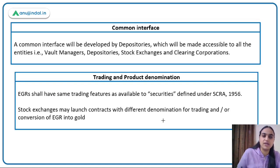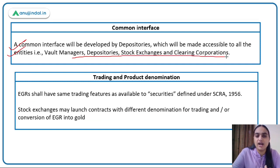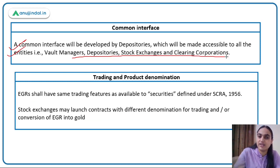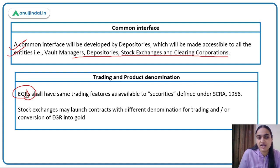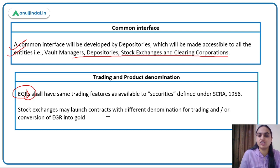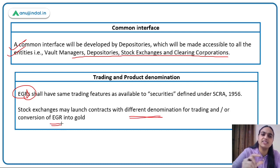A common interface will be created where all vault managers, depositories, stock exchanges, and clearing corporations can interact — tracking whether EGRs are created or converted back to physical gold. EGRs will be traded the same way as other securities. Stock exchanges can launch EGRs with different denominations, each corresponding to different quantities of physical gold.